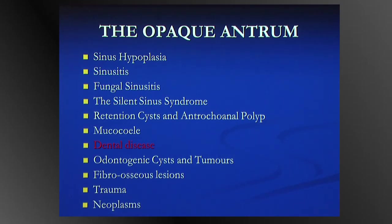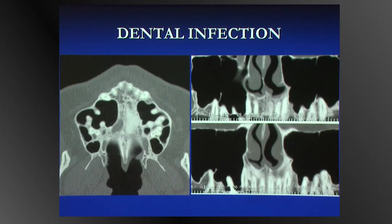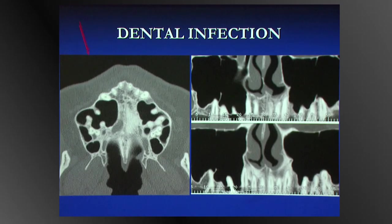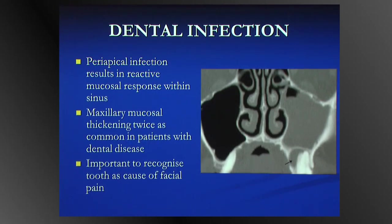Dental disease is important. Evaluation of sinuses is not complete until you've looked at the teeth. The roots of the molars and premolars have an intimate relationship with the antrum, so dental disease can influence the antrum. Mucosal thickening is twice as common in patients with dental disease. Importantly, people with facial pain may have antral opacification, but the clinician may be confused that the sinus is causing the pain, whereas in fact it's the tooth. It's important to highlight that dental disease may be causing symptoms irrespective of the degree of antral opacification.